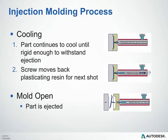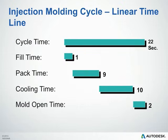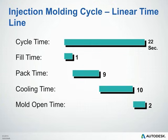During the cooling phase, the screw is also typically moving back and plasticating — building up your next shot — just to save cycle time. After cooling is finished, the mold will open and the part will be ejected. The injection molding cycle is linear: fill, pack, cool, then mold open and eject. Adding up these four phases gives you your cycle time. The pack and cooling times are typically a significant portion of the cycle, so this is where you can commonly leverage the software to optimize your cycle time.